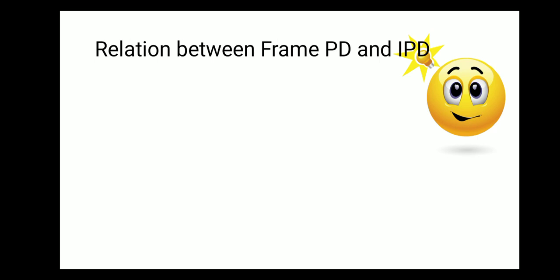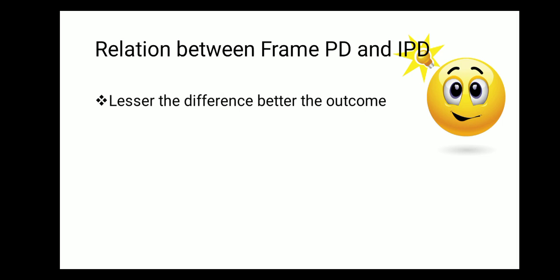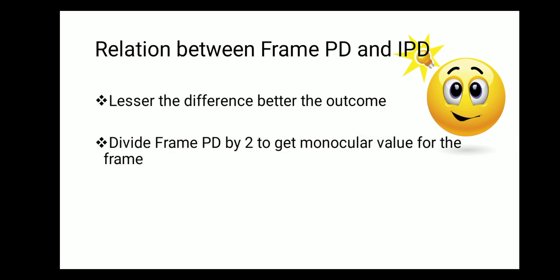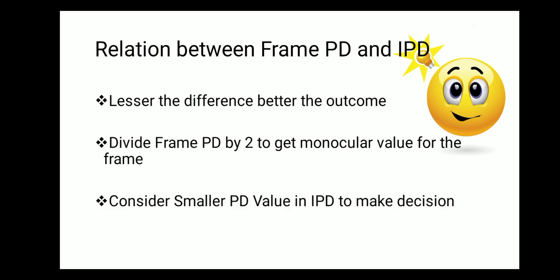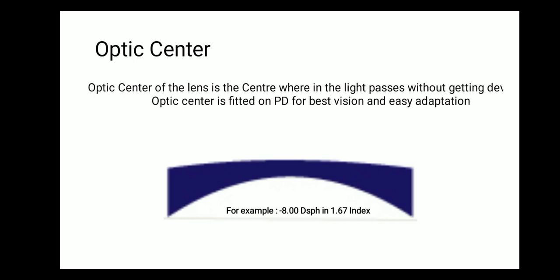Now, how are frame PD and IPD connected in terms of thickness? For lesser thickness, the difference between frame PD and IPD should be as small as possible — the lesser the difference, the better the outcome. Divide the frame PD by 2 to get the monocular value. Since right IPD and left IPD are not the same, always use the smaller PD value. For example, if the right eye PD is 31 and the left eye PD is 33, consider 31 as your reference value.